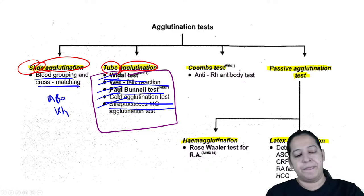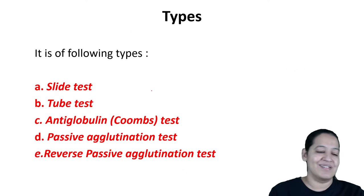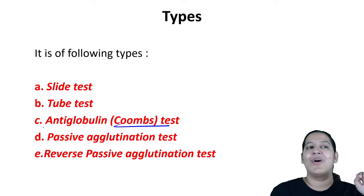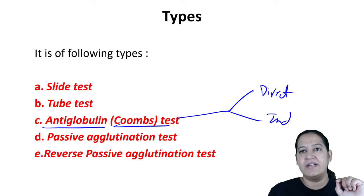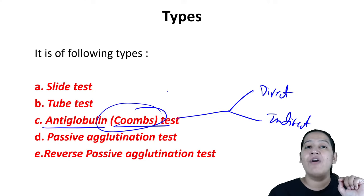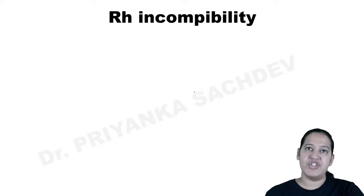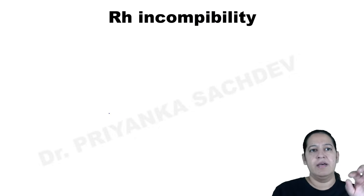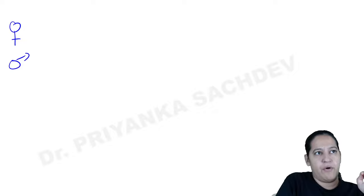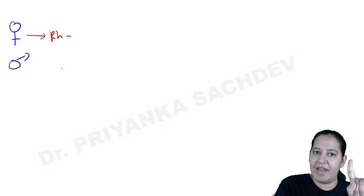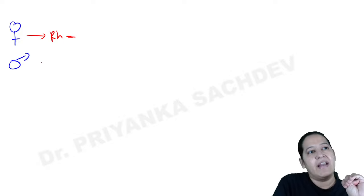Now the Coombs test, also called the antiglobulin test, is of two types: direct and indirect. We perform Coombs test when suspecting erythroblastosis fetalis, which arises from Rh incompatibility. The scenario: wife is Rh negative and husband is Rh positive.